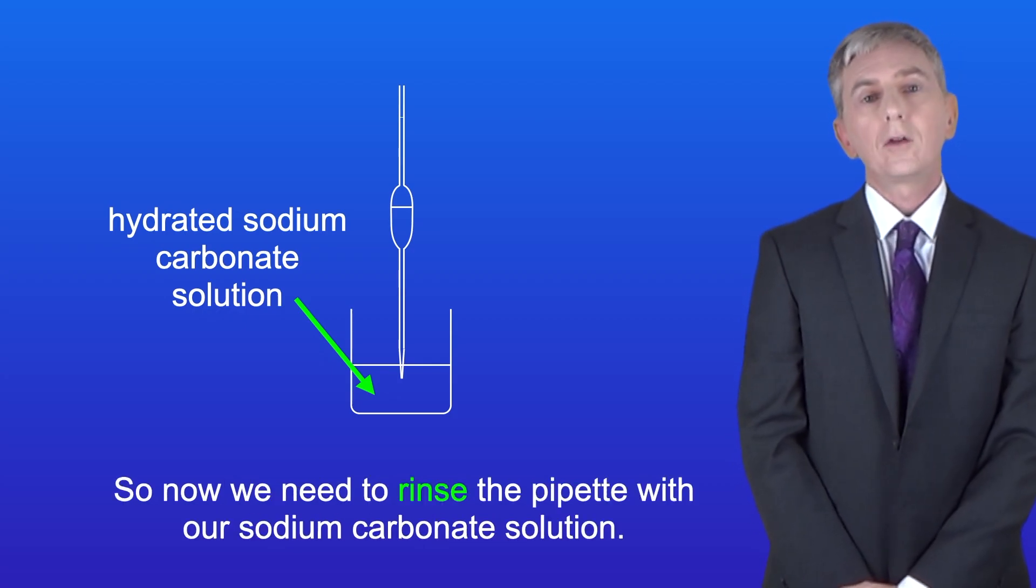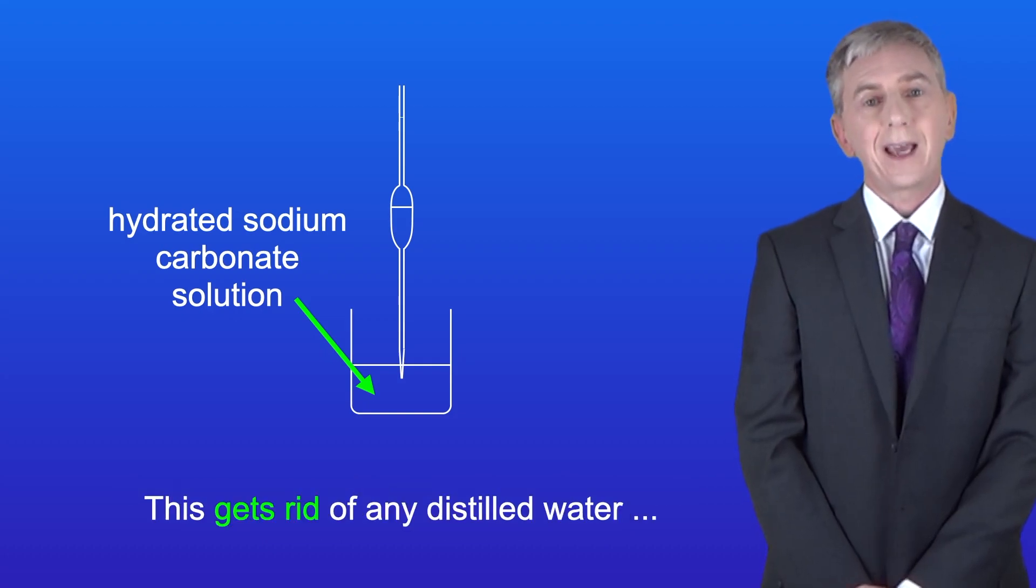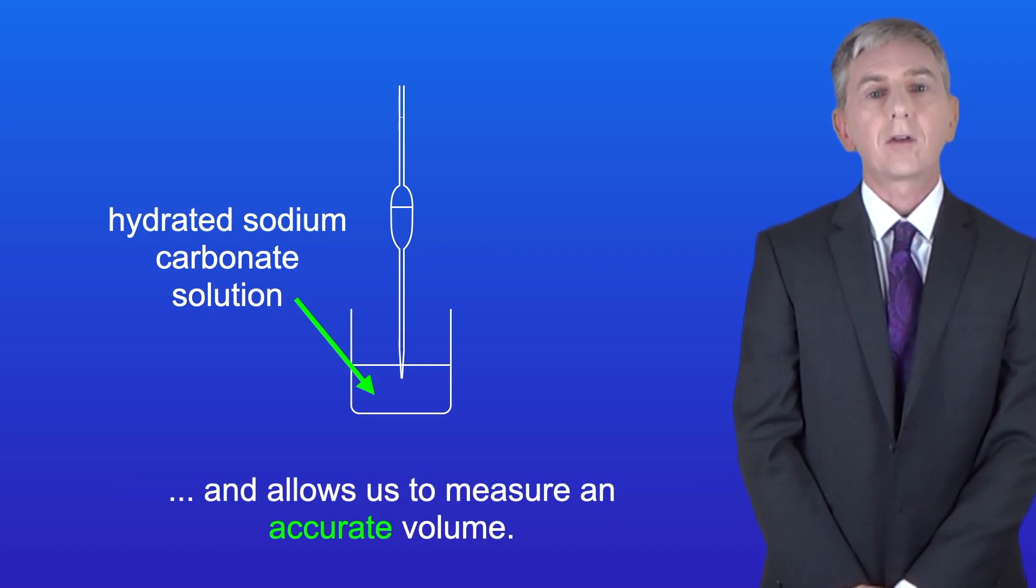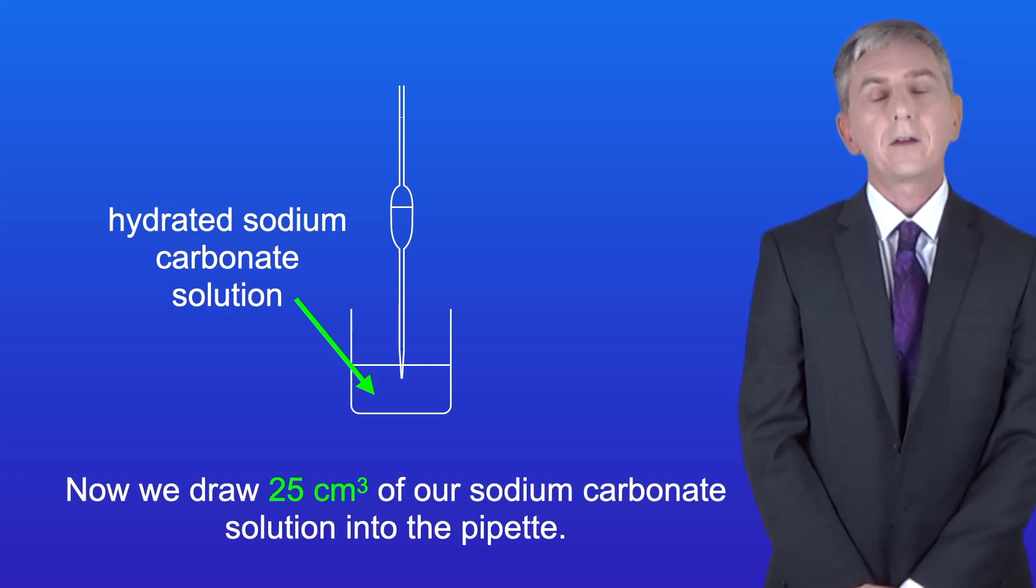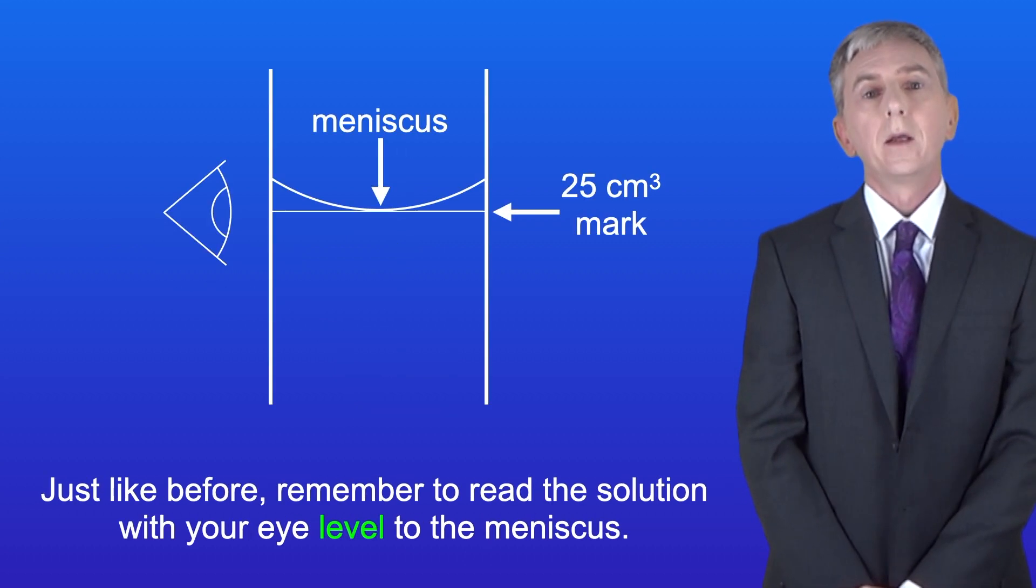That's because the traces of distilled water would contribute to the volume of liquid in the pipette. So now we need to rinse the pipette with our sodium carbonate solution. This gets rid of any distilled water and allows us to measure an accurate volume. So now we draw 25 centimeters cubed of our sodium carbonate solution into the pipette.